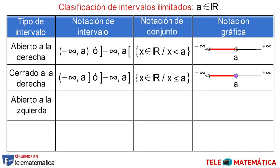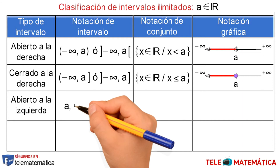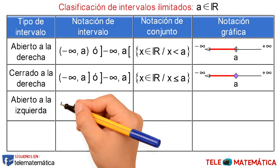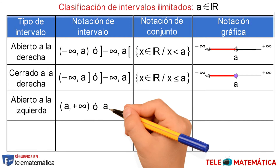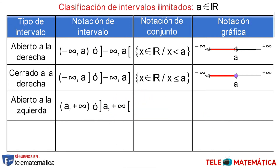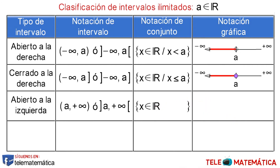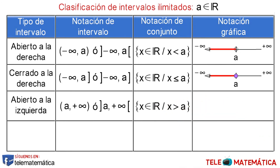Tercera clasificación: intervalo abierto a la izquierda, donde su notación de intervalo es A coma más infinito entre paréntesis, o A coma más infinito entre corchetes abiertos. Su notación de conjunto es, entre llaves, donde todos los valores de X pertenecen al conjunto de los números reales, tal que X es mayor que A.